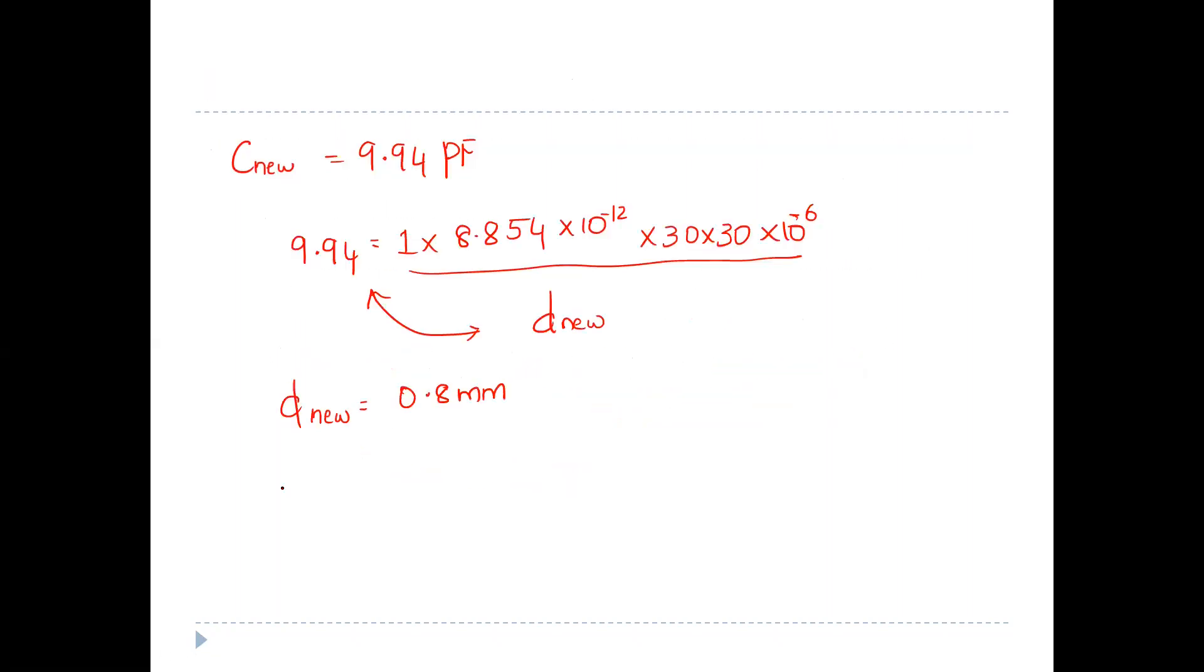This is the new displacement, so change in displacement will be 0.8 minus 0.5. So the displacement that is decreasing the capacitance value is, when I move it by 0.3 mm, the capacitance will be decreased by 6 picofarads.